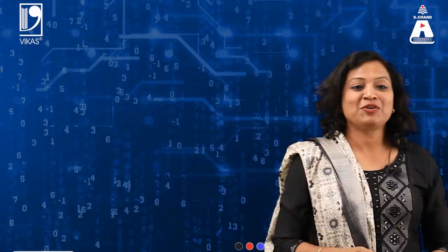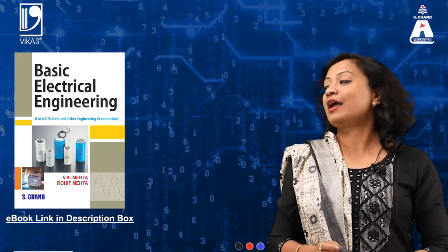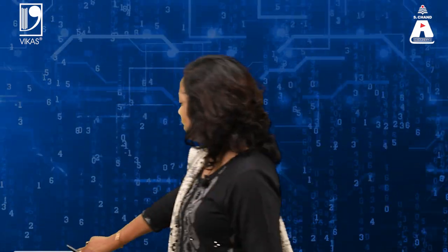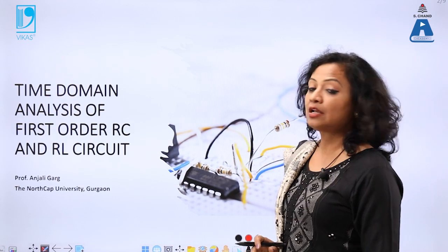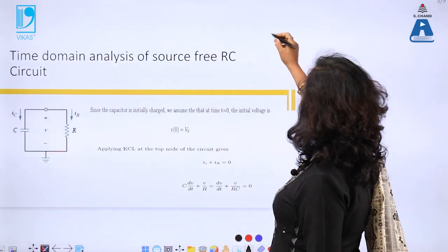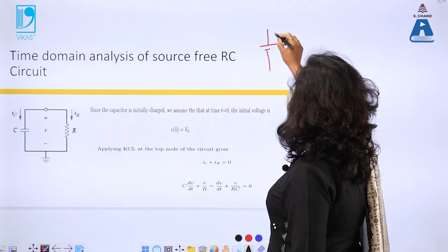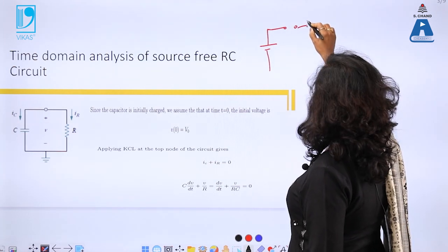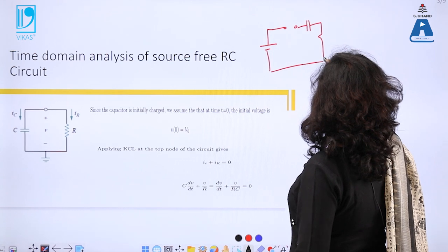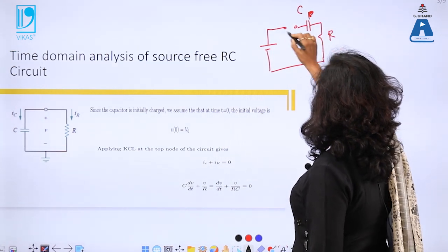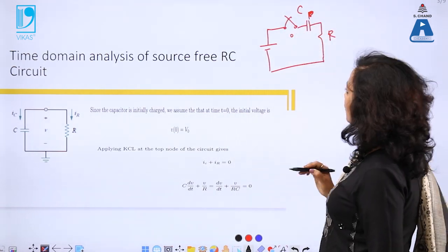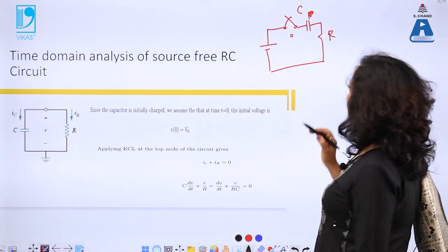I'm Professor Angelica and welcome to S. Chand Academy. Today we are going to discuss the time domain analysis of first order RC and RL circuits. Suppose I have a circuit with a switch, a resistor R and a capacitor C. Initially the switch is closed at one point and the capacitor is fully charged.